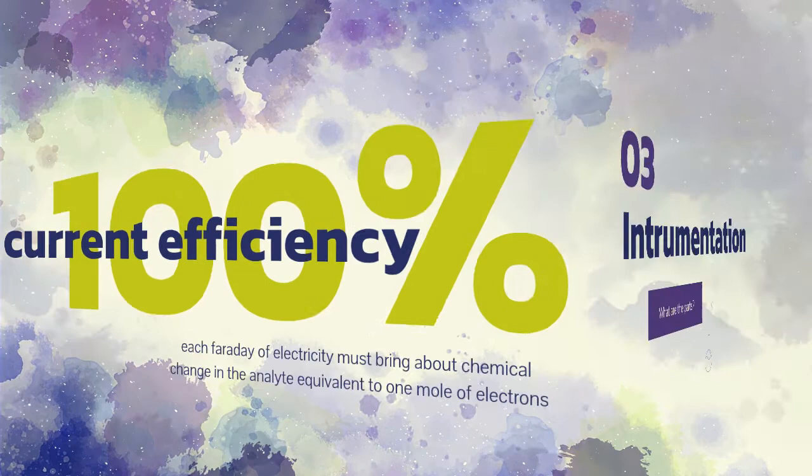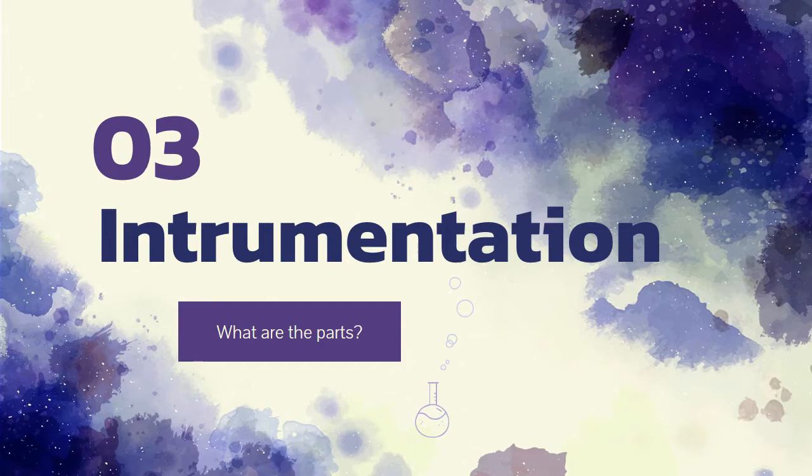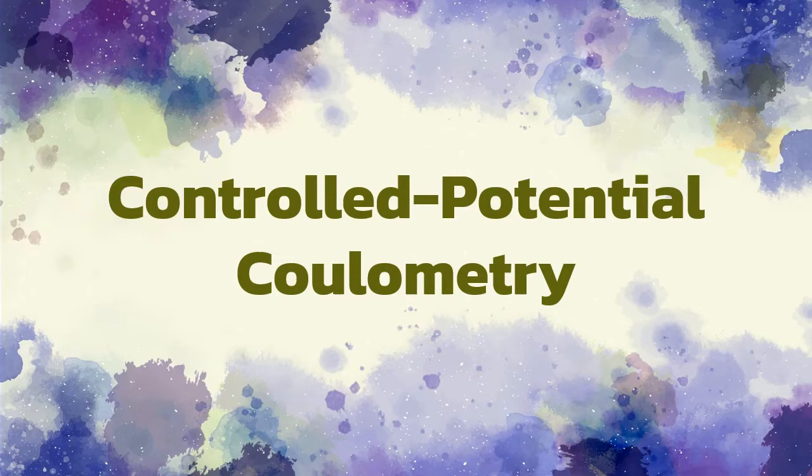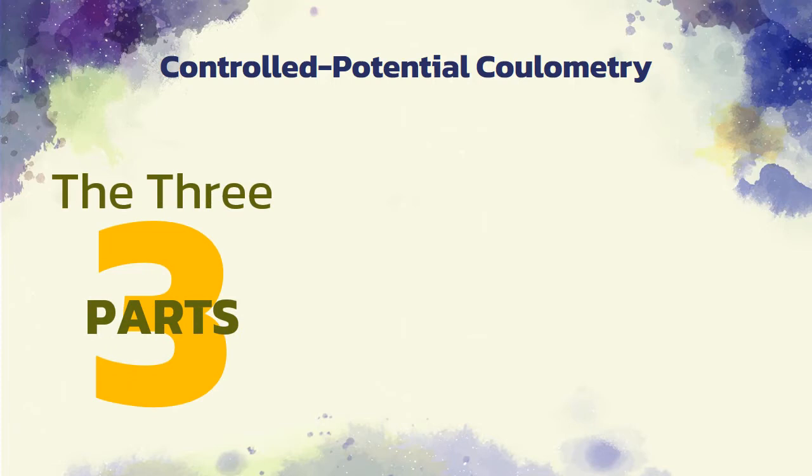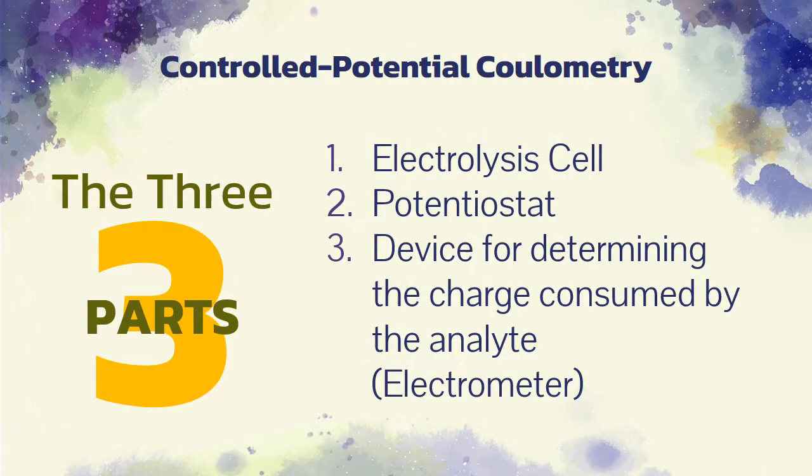Earlier, I have introduced two types of coulometric methods. I will be discussing the instrumentation behind each of those methods. Starting with controlled potential coulometry. The instrumentation for potentiostatic coulometry consists of an electrolysis cell, a potentiostat, and a device for determining the charge consumed by the analyte.